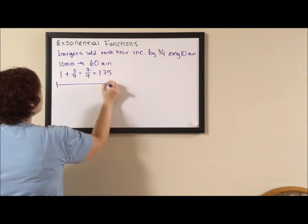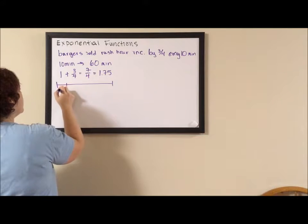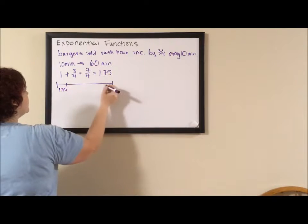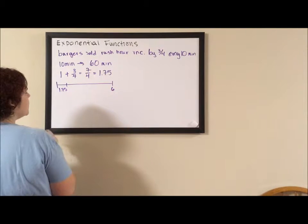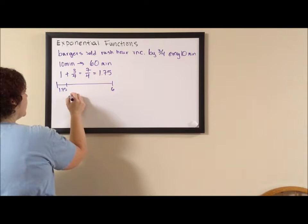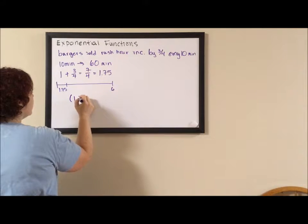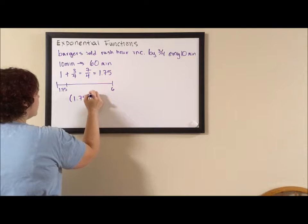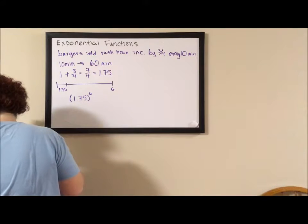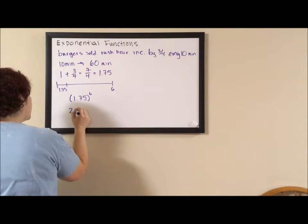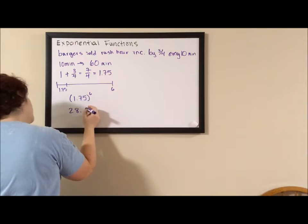So if the 10 minute is 1.75 and we need to do it six times, what we end up having is 1.75 to the power of six. And if we calculate that, we get 28.723.